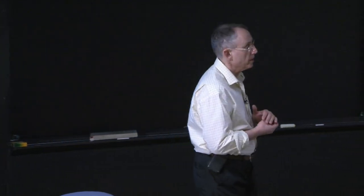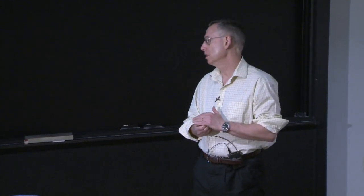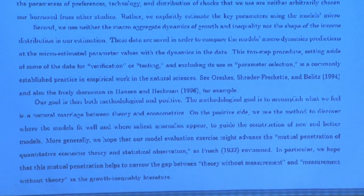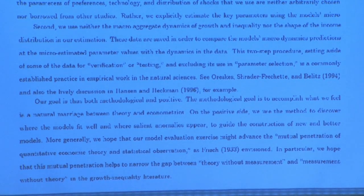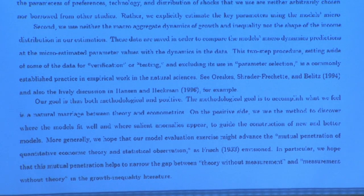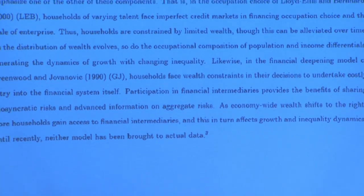The main theme today is this marriage of theory and data. Frisch, very early on in the 1930s, was a big champion of the mutual penetration of quantitative economic theory with statistical observations — I think that's actually on the Econometrica cover. We're somewhere between theory without measurement and measurement without theory, a big controversy in business cycle analysis — a big debate between Koopmans and Burns and Mitchell.